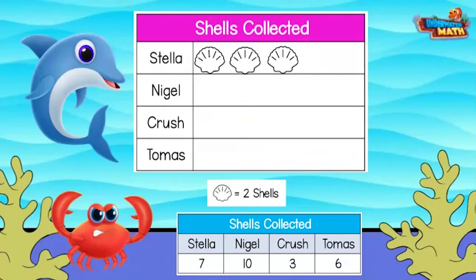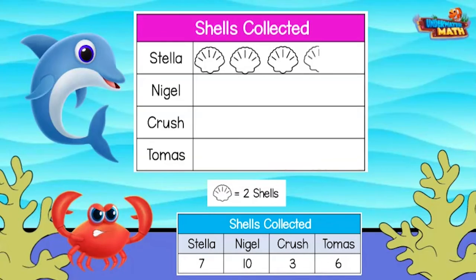If we cover half of this shell, it now becomes half its value. If one whole shell is worth two, what is half a shell worth? Is it one? Yes, amazing! Nigel found ten shells. Each shell represents two: two, four, six, eight, ten.